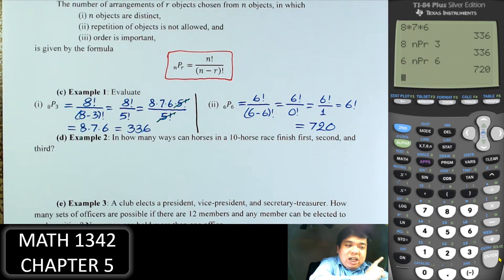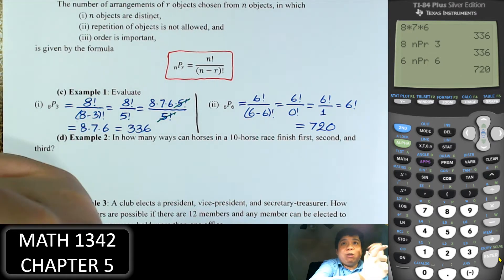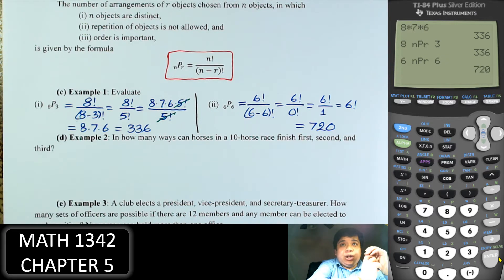The key in permutation is: we choose something out of something, but the order does matter. That's very important.